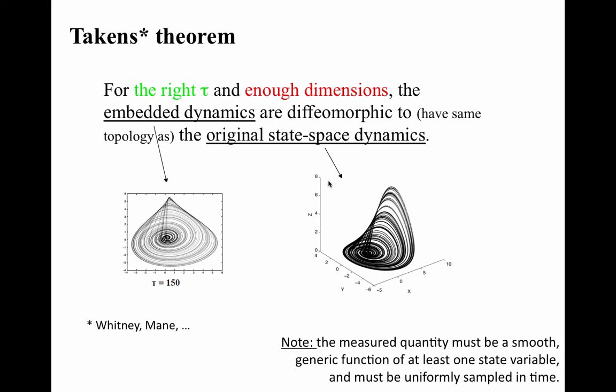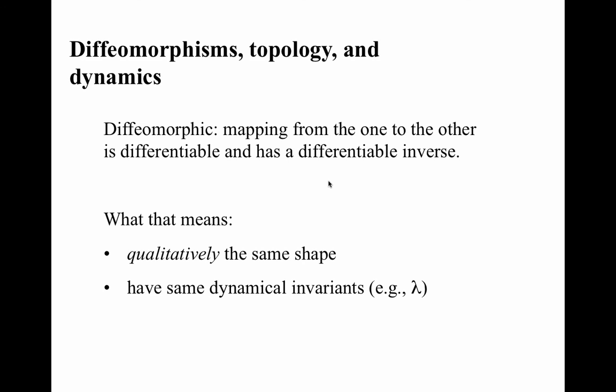And all of that means that you can measure one thing from a very complex system, do the embedding, compute the value of one of these dynamical invariants, and assert that your answer holds for the true unobserved dynamics inside the black box. Which is pretty darn amazing.